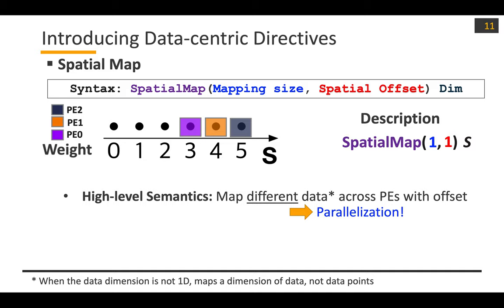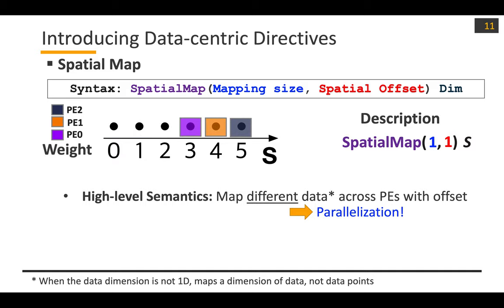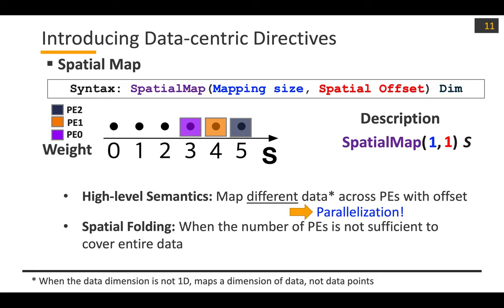Sometimes spatial map can also have a temporal aspect. From positions 0, 1, 2, we need to move on to 3, 4, 5 to cover the entire dimension. This happens when we don't have enough PEs to cover the entire data dimension. In this case, an implicit temporal offset is applied — the offset equals the number of PEs.